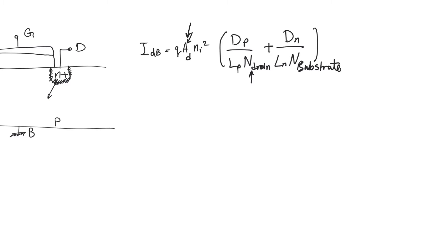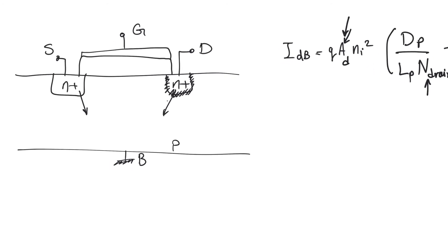Drain resistance is a parasitic resistance that we never had to model before — when we modeled the transistor we assumed the source and drain were almost short circuits, but there is a small drain resistance and a small source resistance. To keep this resistance very small, we need to keep the area of the drain and source large and make them relatively deep, since depth increases the effective area and thus reduces resistance.